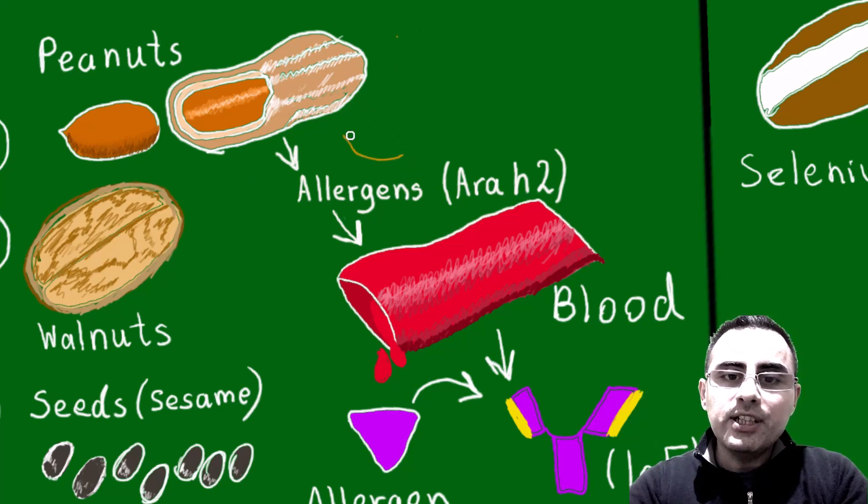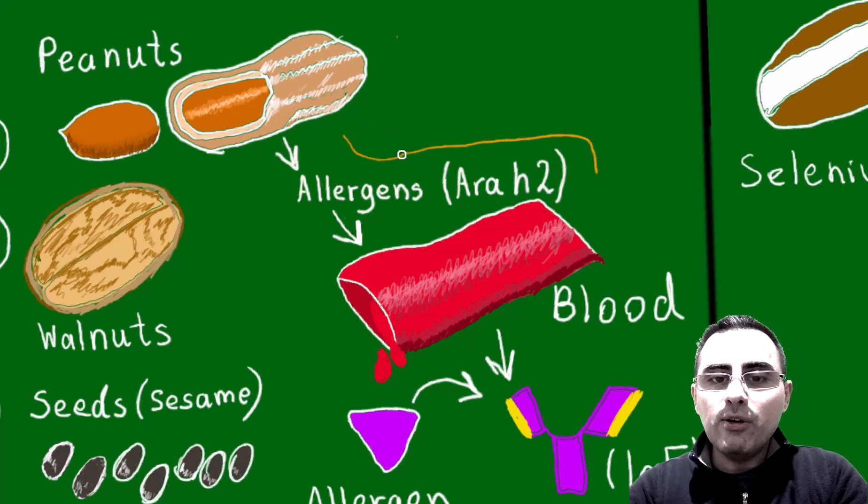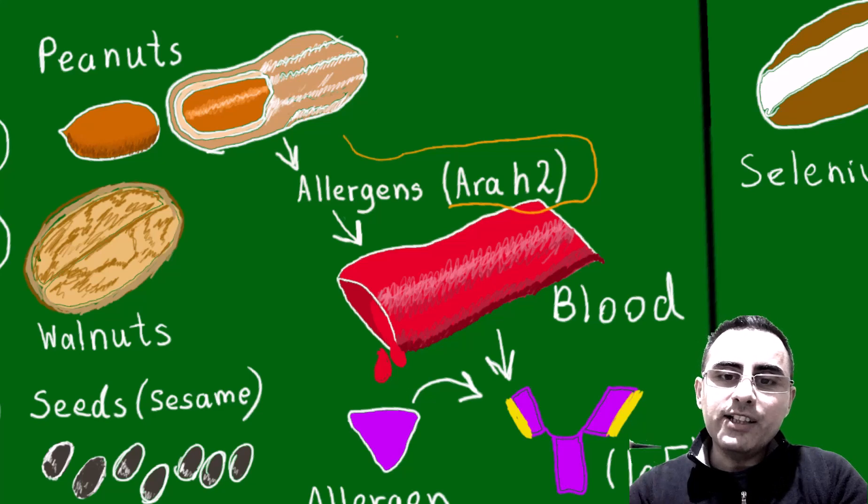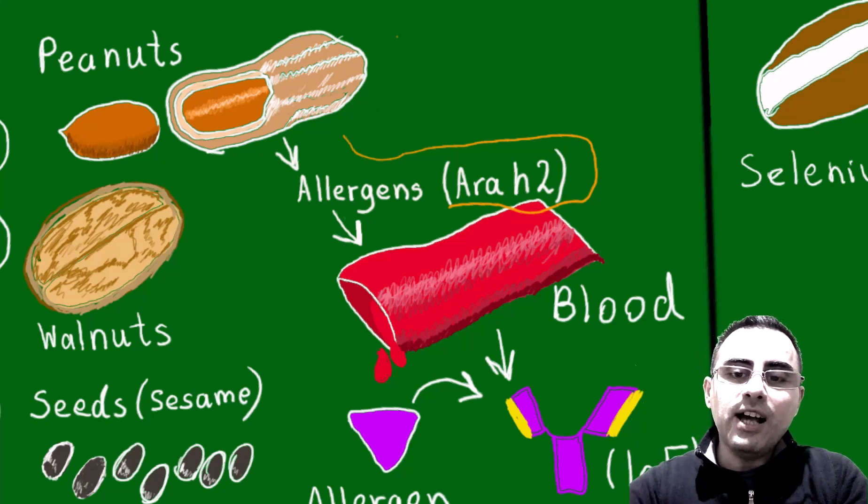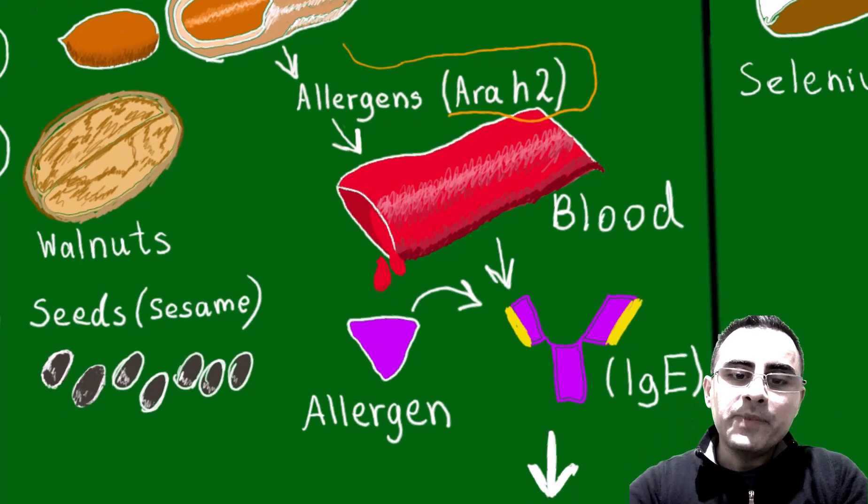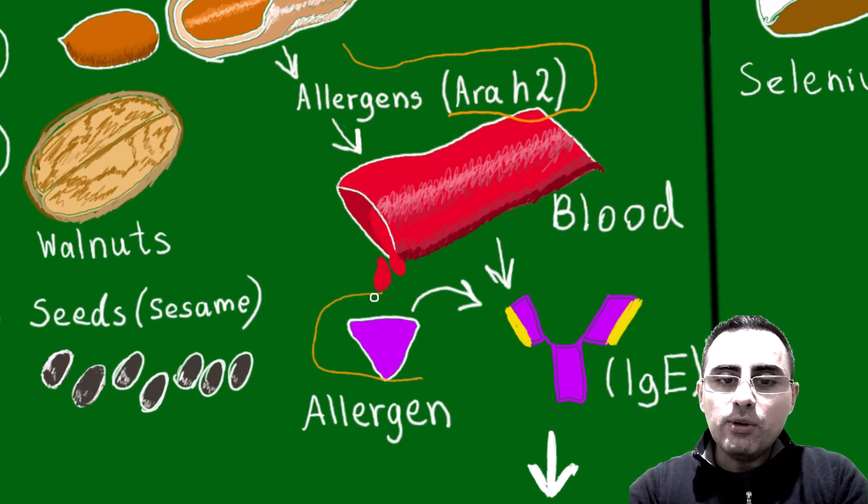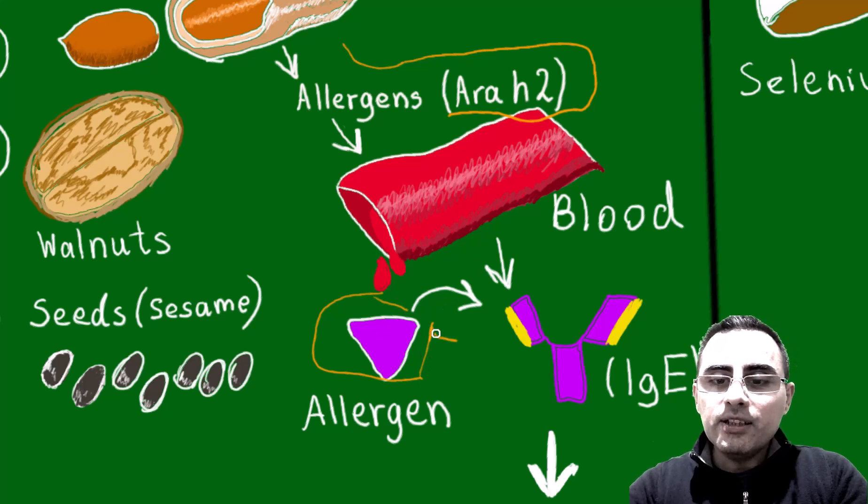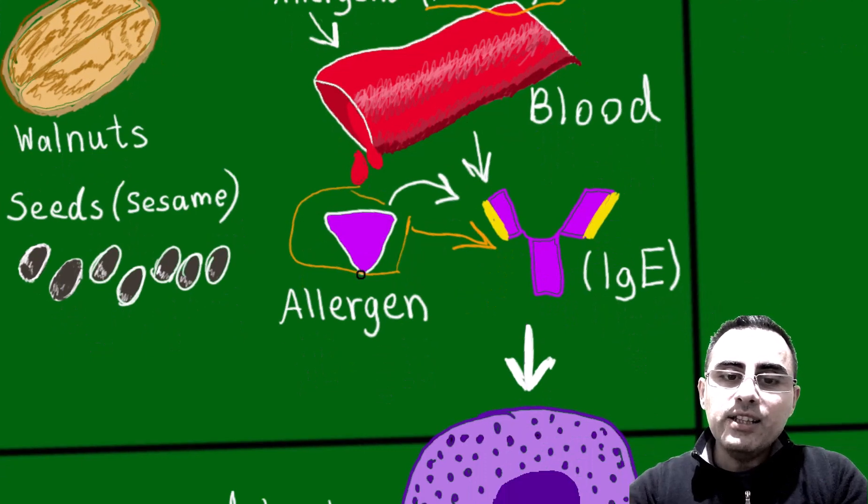Peanuts contain allergens known as Ara h2, though other types of allergens also exist. These allergens are proteins. These proteins enter the bloodstream and bind to IgE, immunoglobulin E.